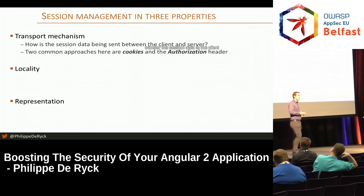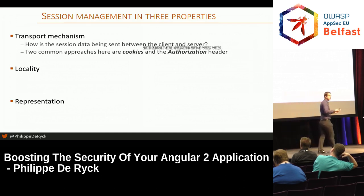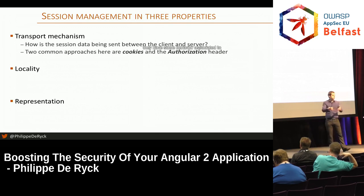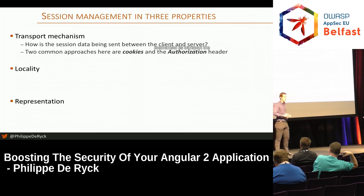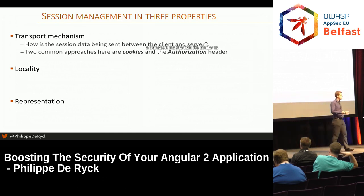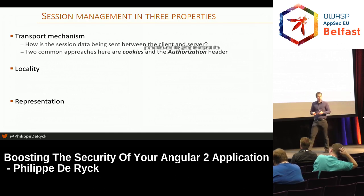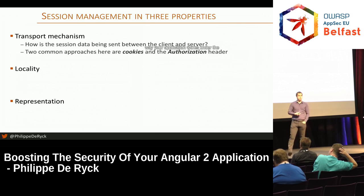Transport mechanisms: how do you transfer session data between client and server? Cookies are a very old example — simply a way to transport session information with some browser behavior attached, essentially a header-based mechanism. The authorization header is often used in Angular applications nowadays. It's also a transport mechanism, similar to cookies but with very different properties.